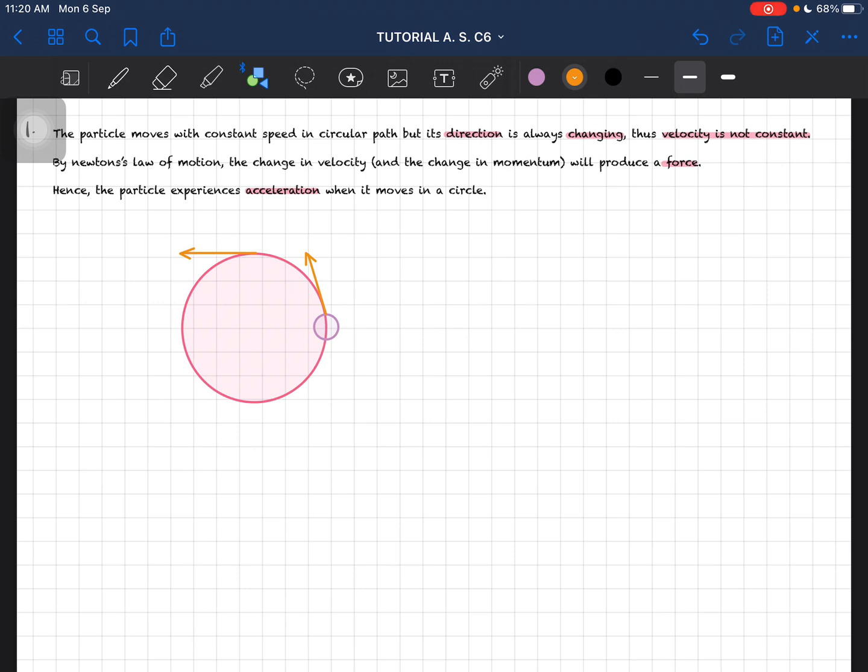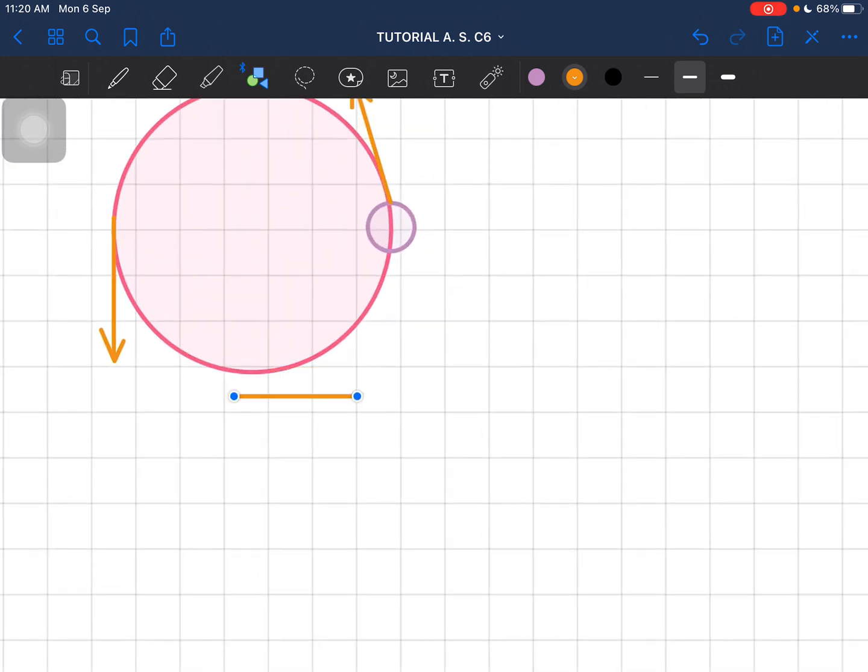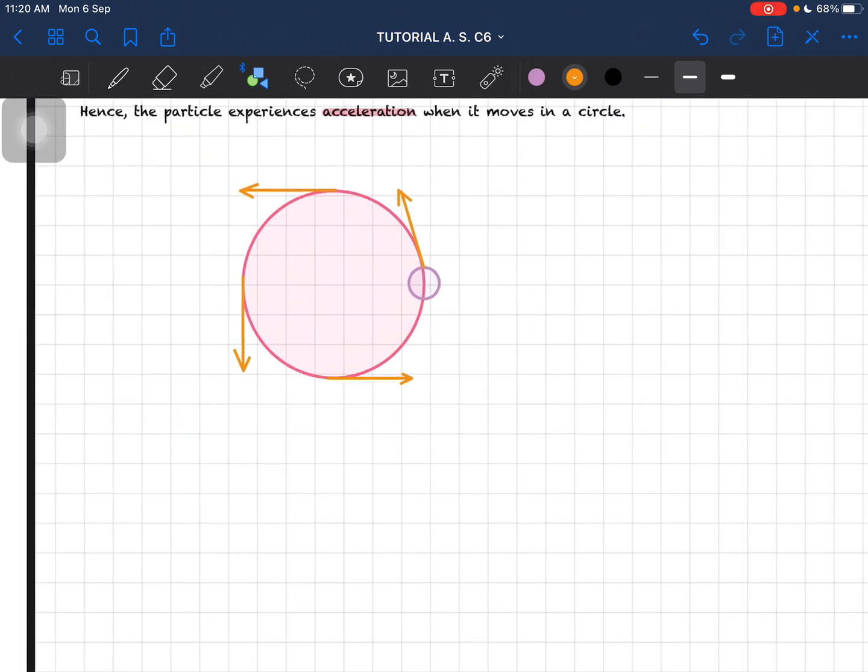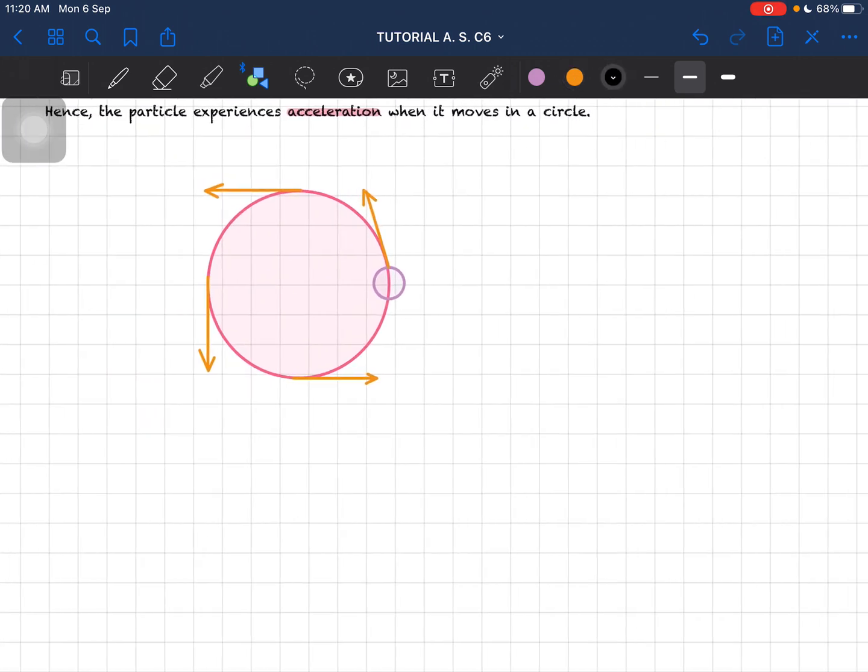The velocity keeps on changing direction. When there's a change in direction, which is a change in velocity, the object is experiencing a change in momentum.